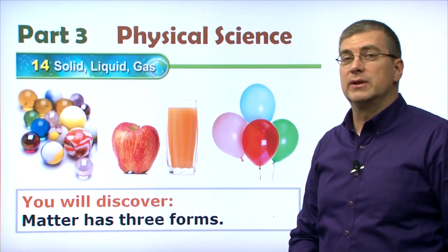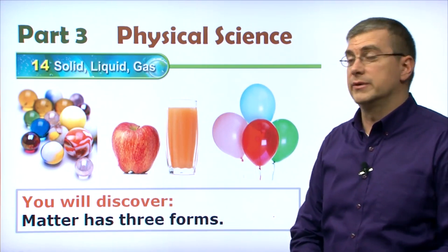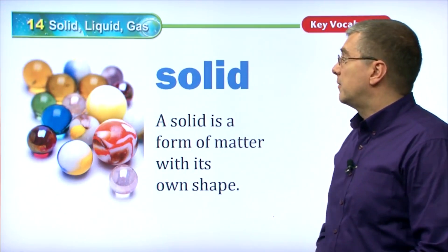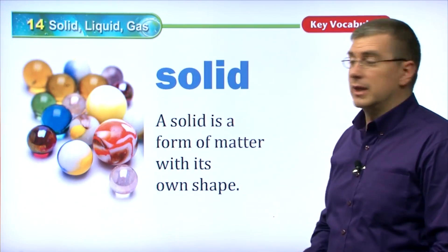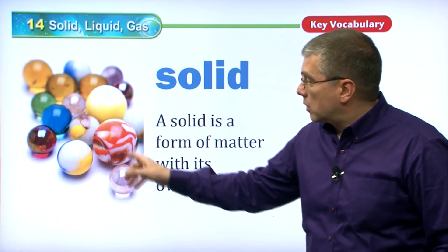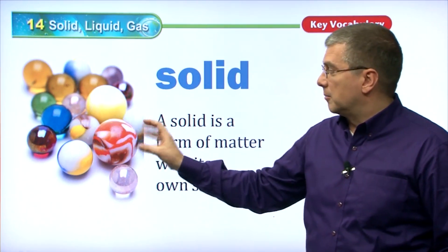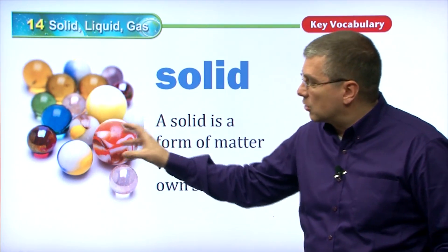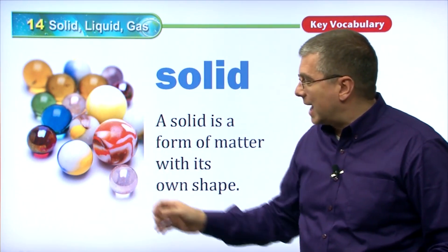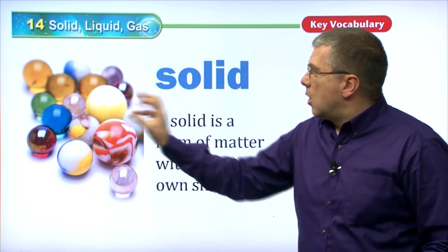Let's cover those different types of forms. First of all, we have solid. As I saw before, these are marbles. They're probably granite or glass, and these are solid.